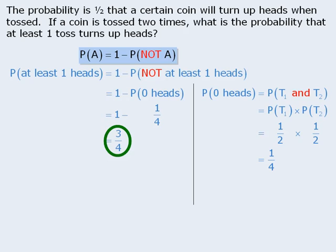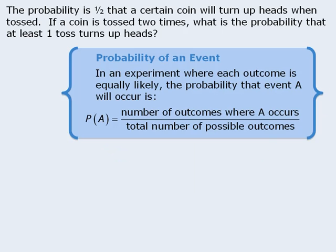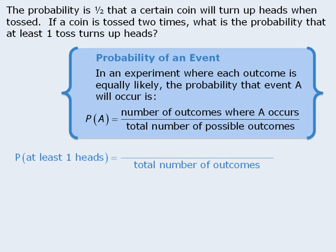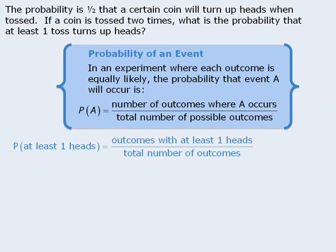While the complement approach is probably faster than the first option, it probably isn't the fastest approach. For our next approach, let's apply the basic probability formula. To find the probability that at least one toss is heads, we need to find the total number of outcomes as well as the total number of outcomes with at least one heads. We can apply counting techniques or simply list them.